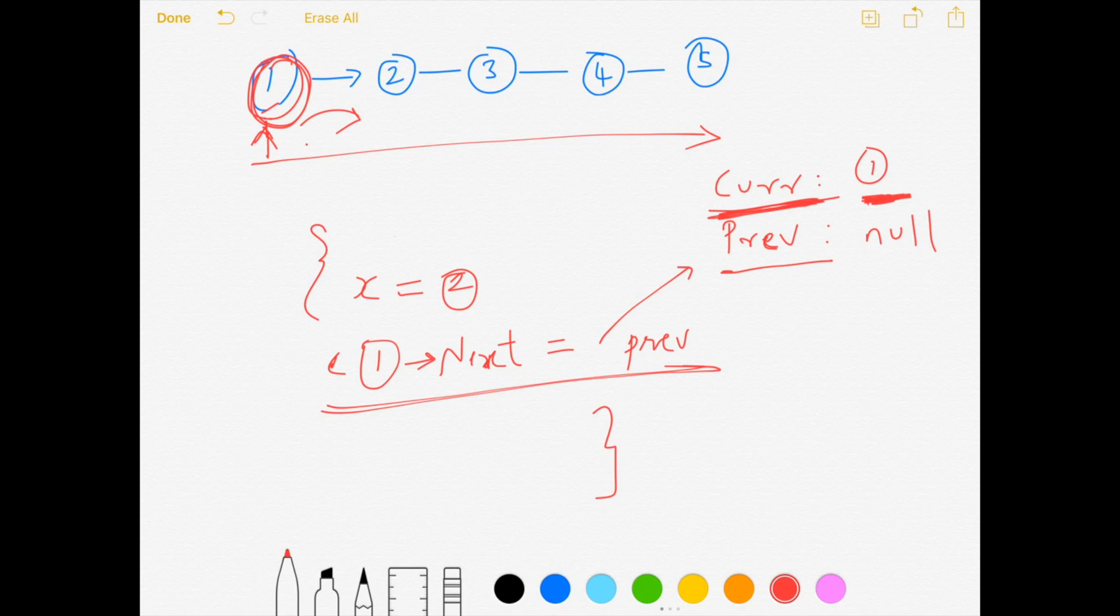My current value will become the next value after one in the original input, which is what we have saved in the variable x. So my current will become two and my previous will become one because we have completed the iteration. So my previous will become the new one with an updated next variable.